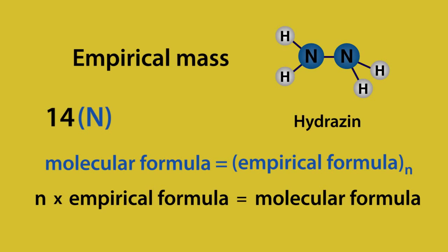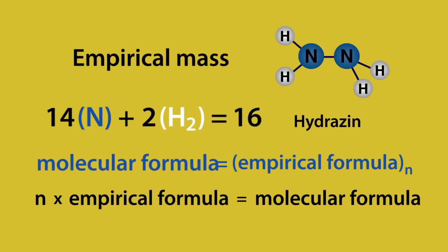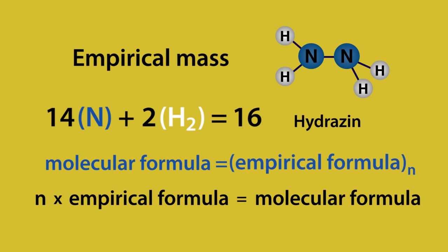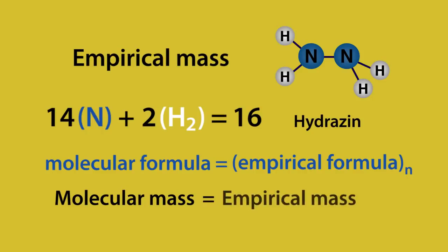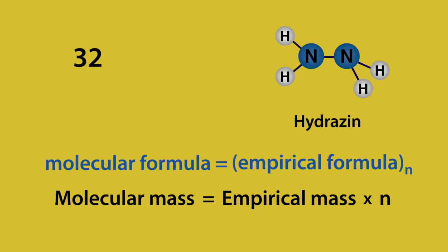So in this case, we have nitrogen, which is 14, plus hydrogen, which is 2, giving us an empirical mass of 16. Just as the molecular formula is the empirical formula times N, the molecular mass is the empirical mass times N. So a molecular mass of 32 equals N times the empirical mass, 16.